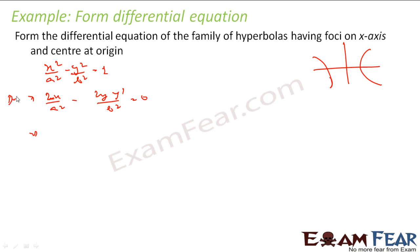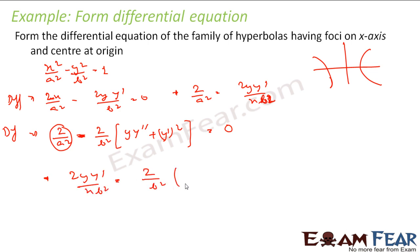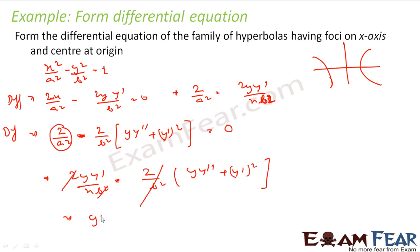Differentiating again: 2/a² − (2/b²)·[y·y'' + (y')²] = 0. From the first equation, 2/a² = (2y·y')/(x·b²). Substituting and cancelling 2/b², we get yy'/x = y·y'' + (y')², which simplifies to yy' = x·y'' + x·(y')². That is the final answer.